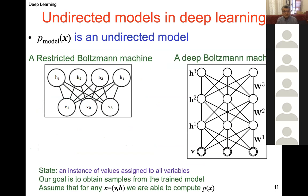The model is an undirected model. A state is an instance of values assigned to all the variables, and our goal is to obtain samples from the trained model. We assume we know all the W's and that for any x we are able to compute p(x). This is a fair assumption because knowing all the values, you just plug them into the Gibbs formulation — though you would need Z.